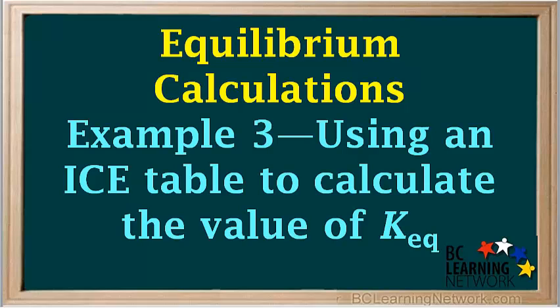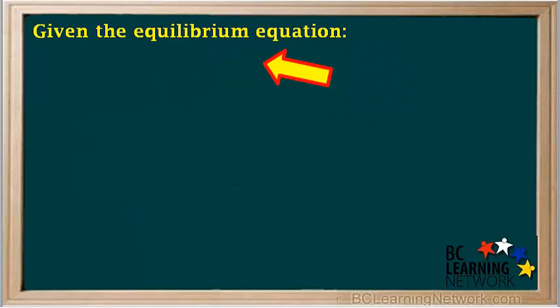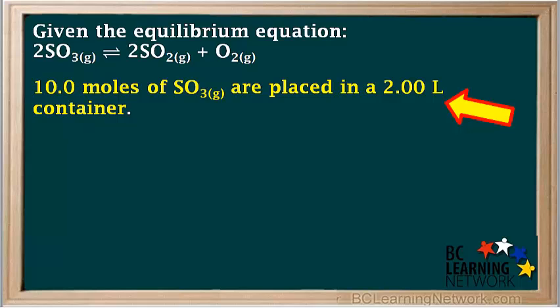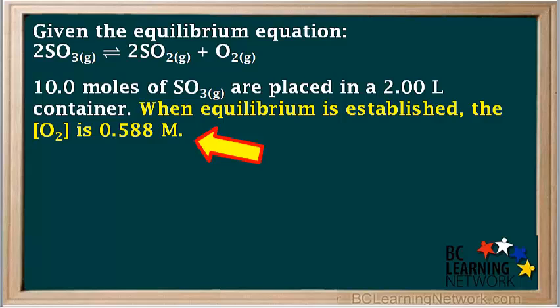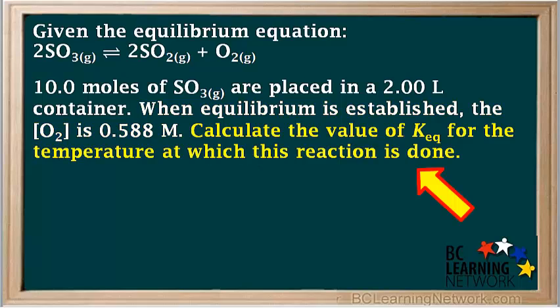In this example, you are given the initial concentrations of all species and the equilibrium concentration of one of them. You will learn how to use an ICE table or ICE chart to find the equilibrium concentrations of all the species and use these to calculate the value of Keq. Given the equilibrium equation 2SO3(g) → 2SO2(g) + O2(g), 10 moles of SO3 gas are placed in a 2-liter container. When equilibrium is established, the concentration of O2 is 0.588 molar. We are asked to calculate the value of Keq for the temperature at which this reaction is done.